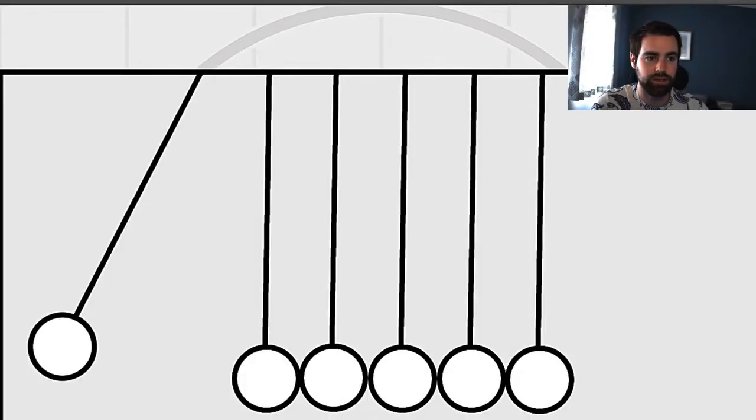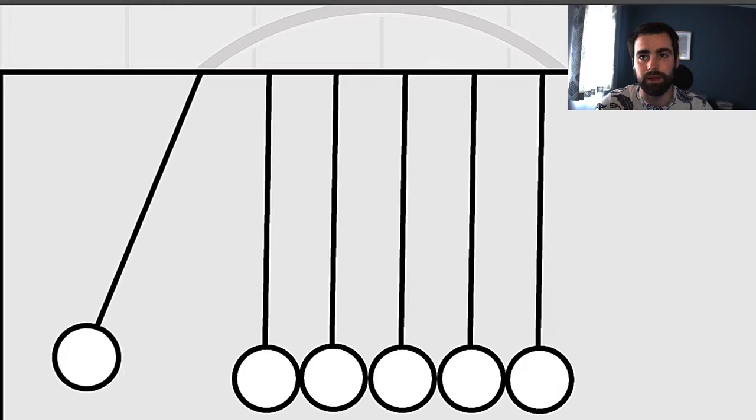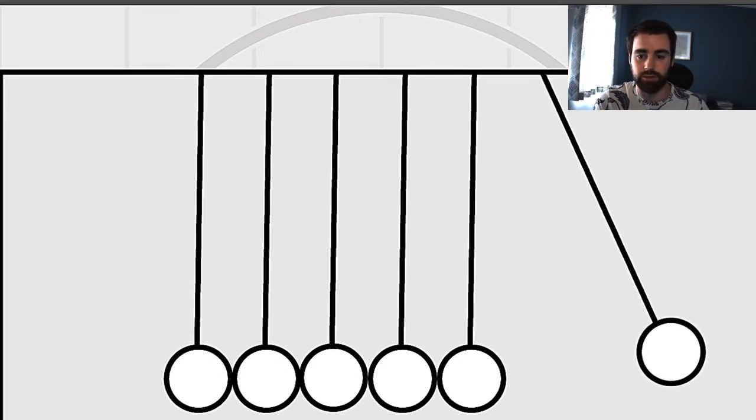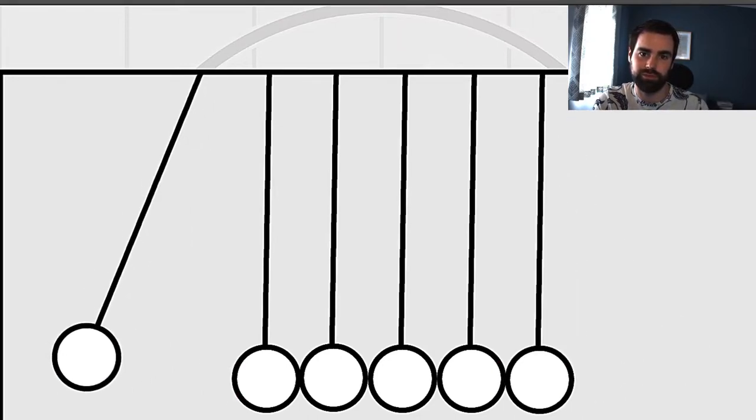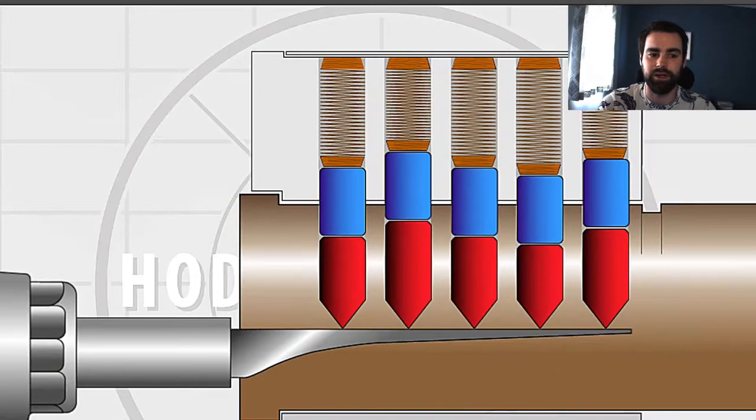The easiest example I can think of to explain how the Cronus works is the Newton's cradle theory. You know how the balls hit from side to side and the kinetic energy is passed from the furthest point to the furthest point. It's a very similar principle to what we're trying to achieve here.